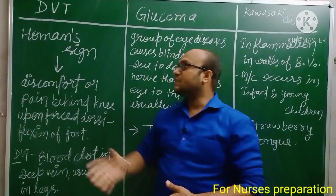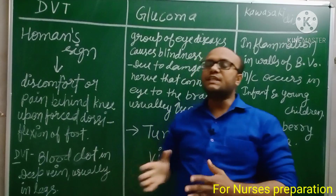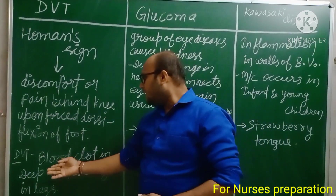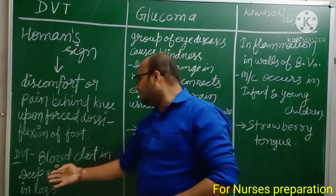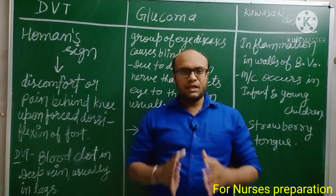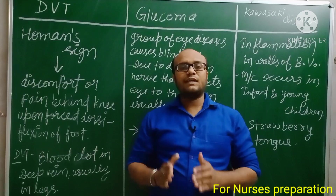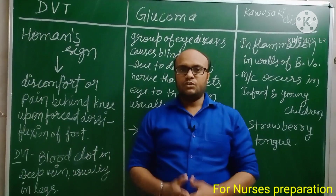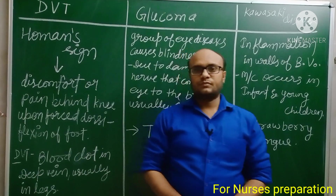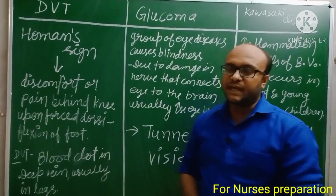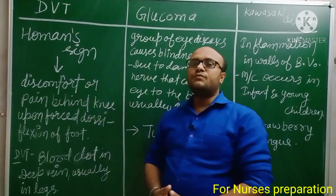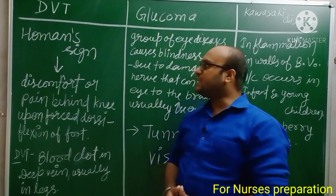The next disease is DVT, which stands for Deep Vein Thrombosis. It is a blood clot in a deep vein, usually in the legs. Deep vein thrombosis is a condition in which a person has a blood clot in the deep muscles, usually in the leg. Now let's talk about the important sign present in the DVT condition: Homan's sign is found positive.